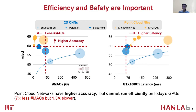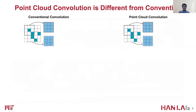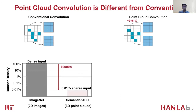However, point cloud networks run with much lower utilization on existing general purpose hardware. A natural question arises: can existing neural network accelerators solve this dilemma? Unfortunately, the answer is no. This is because the point cloud convolution is fundamentally different from the conventional convolution. The input point cloud is extremely sparse, which can be up to 4 orders of magnitude sparser than 2D images.